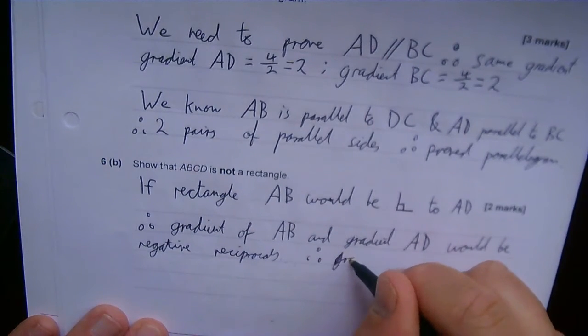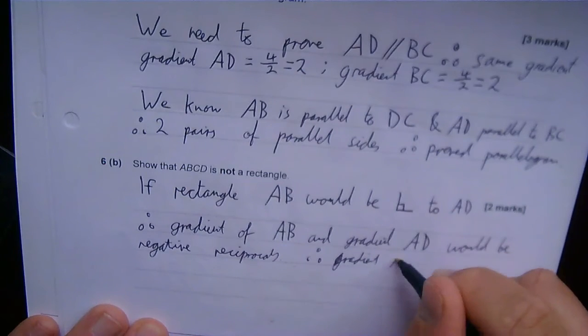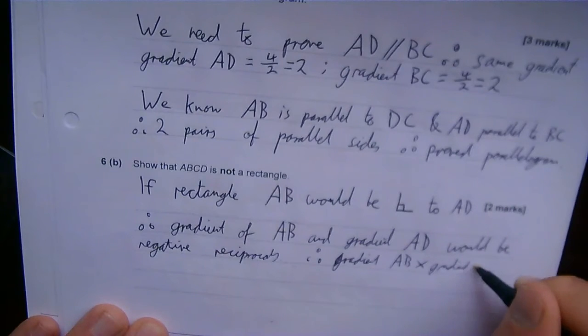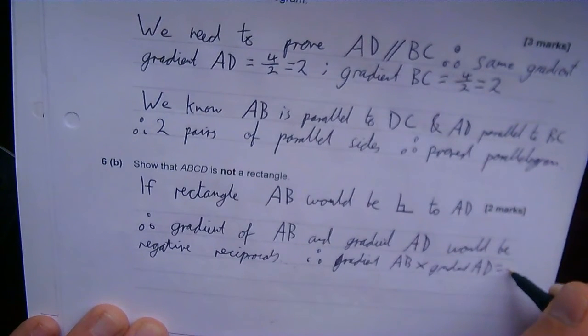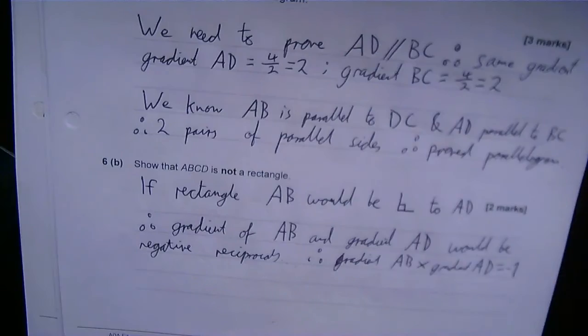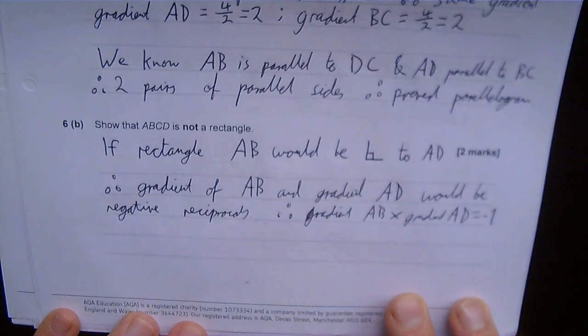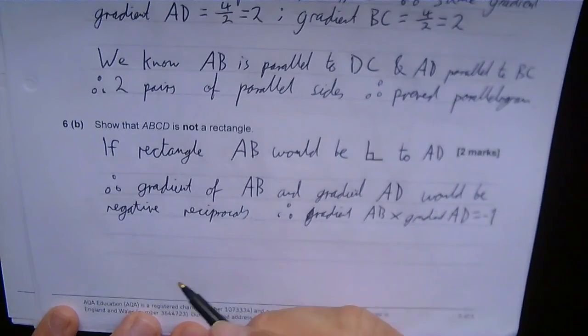Therefore, gradient AB times by gradient AD would be equal to -1. Remember, if things are negative reciprocals, then they multiply together to give -1. And the AQA seem keen on you showing that rather than just saying that they're negative reciprocals.